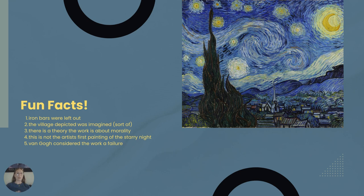There is a theory that the work is about mortality. Cypress trees, as seen in the foreground, are often associated with cemeteries and death. This gives significance to the van Gogh quote: 'Looking at the stars always makes me dream. Why, I ask myself, shouldn't the shining dots of the sky be as accessible as the black dots on the maps of France? Just as we take the train to get to Tarascon or Rouen, we take death to reach a star.'